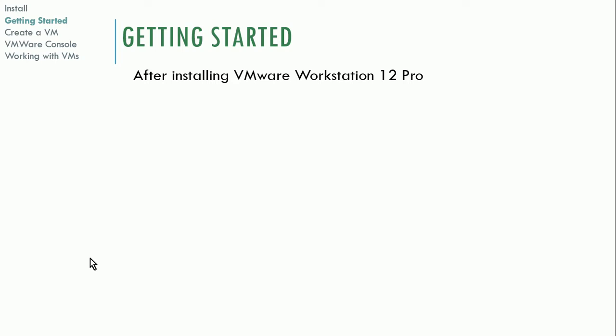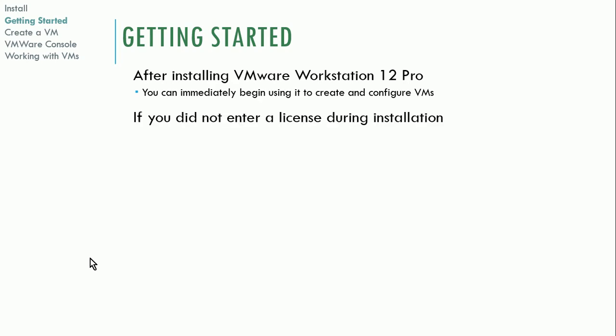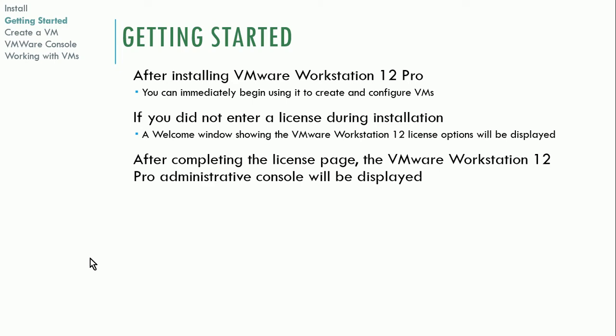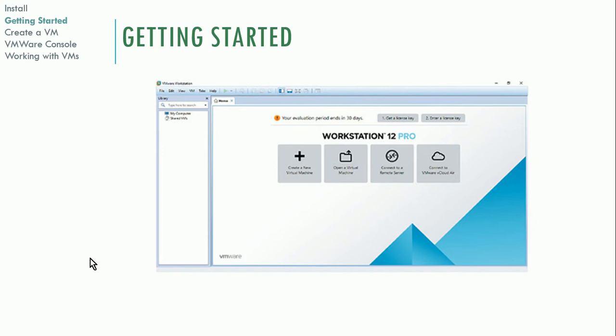After you install VMware Workstation 12, you can immediately begin creating and configuring virtual machines, not unlike VirtualBox. If you did not enter a license during installation, a welcome window showing VMware Workstation 12 license options will appear. After completing the license page, the administrative console will be displayed. It looks a little cleaner and more modern than VirtualBox's UI, but for the most part they have the same basic structure.